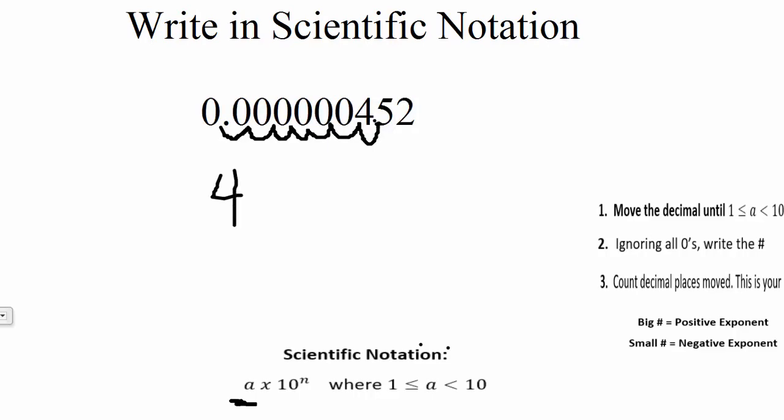Ignoring all zeros, we would have 4.52. And scientific notation is always times 10 to some power. Well, how many times did we move that decimal point? 1, 2, 3, 4, 5, 6, 7 times. So our exponent will be 7.